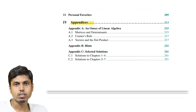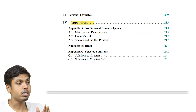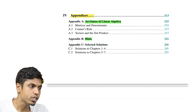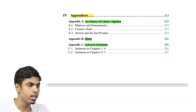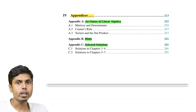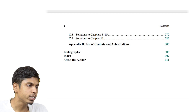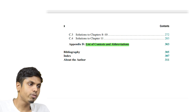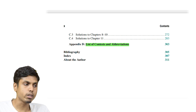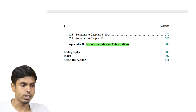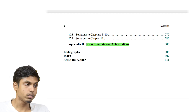The appendices form the fourth section with subsections on linear algebra, hints for all problems in the previous three sections, and selected solutions. Solutions are provided only for selected problems as mentioned. There is also a list of contests and abbreviations — if you are confused by any abbreviation, refer to appendix D to get it clarified. Finally, there is a bibliography with references, an index, and a description about the author.